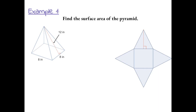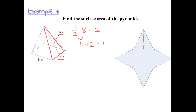Example 1: Find the surface area of the pyramid. We can start by finding the surface area of one of the triangles, then multiply it by four to find the total area of all four triangles, and then find the base. The area of a triangle is one-half times the base, which is eight, times the height, which is twelve. One-half times eight gives us four, and four times twelve gives us forty-eight.